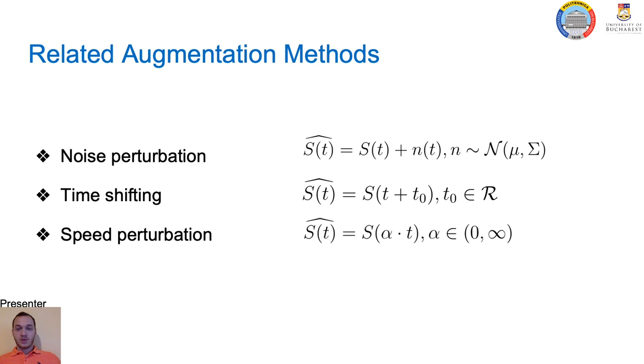As I highlighted before, several approaches for audio data augmentation have been proposed in literature. The most known methods which perform in time domain are noise perturbation, time shifting, and speed perturbation. In the case of noise perturbation, over the raw signal S, a noise signal N is added, which usually follows a normal distribution. In the case of time shifting, the raw signal S is moved along the time axis with a delay factor T0. The delay could be positive as well as negative. In the case of speed perturbation, the raw signal S is delayed or contracted with an alpha factor such that the resulted signal will have a different speed.